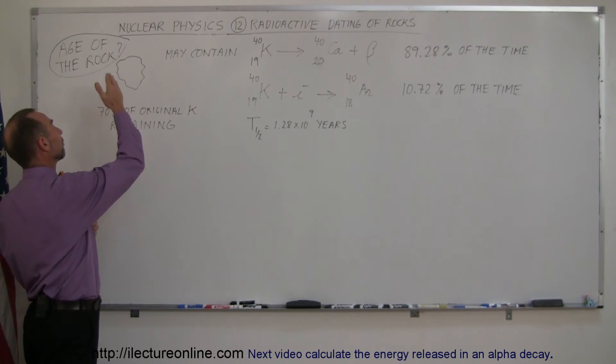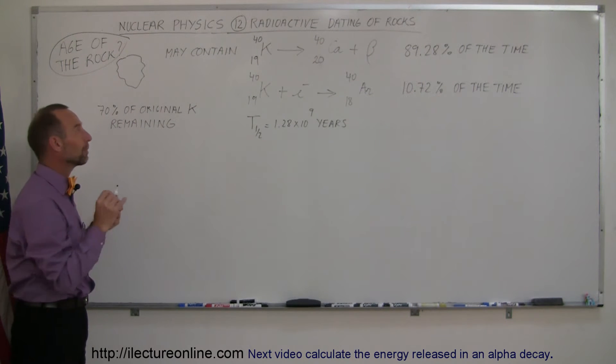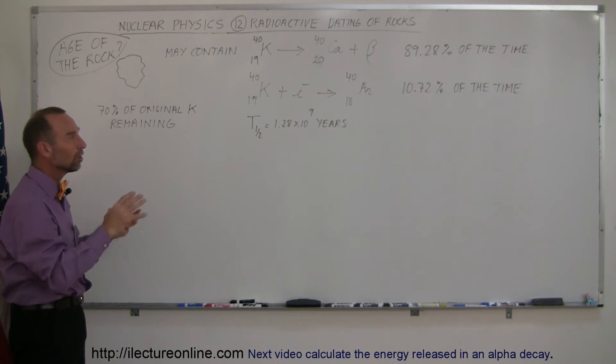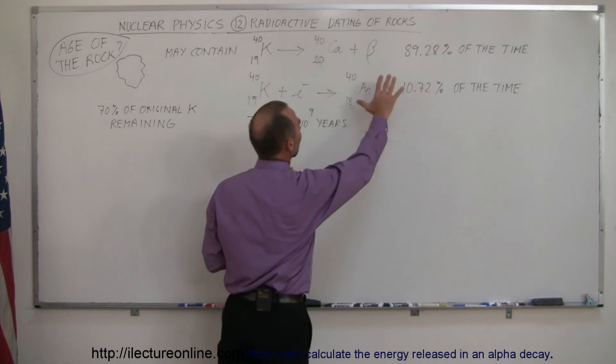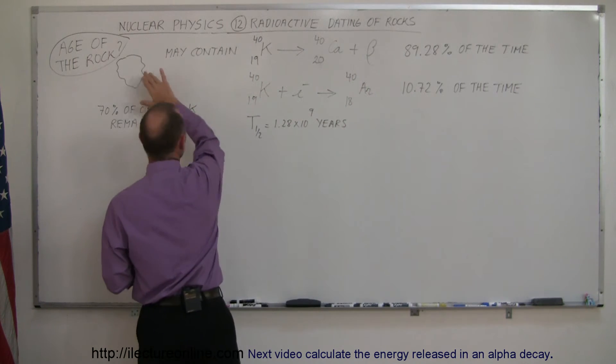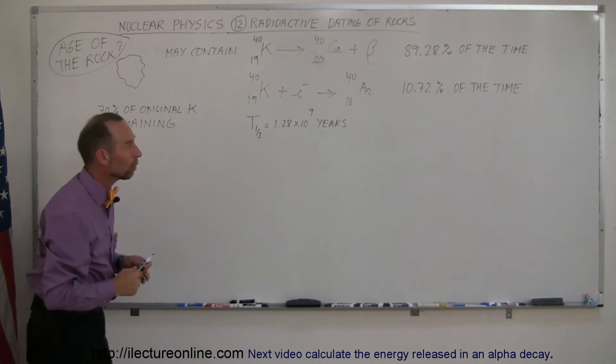So whatever argon we find in the rock now was purely formed after the rock has solidified. So by using the ratio of how much argon is there, and by also figuring out how much potassium is there, and knowing these ratios of how that forms,